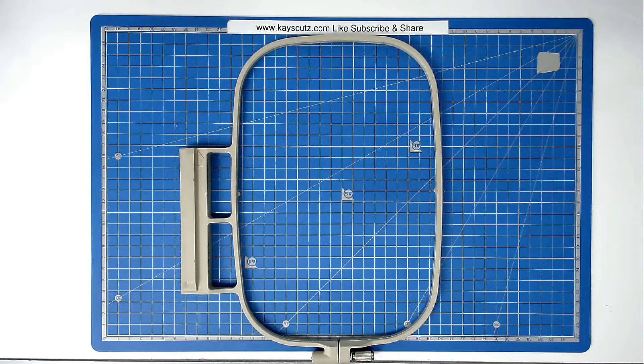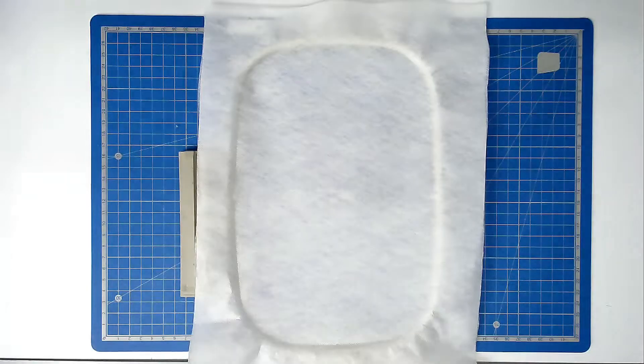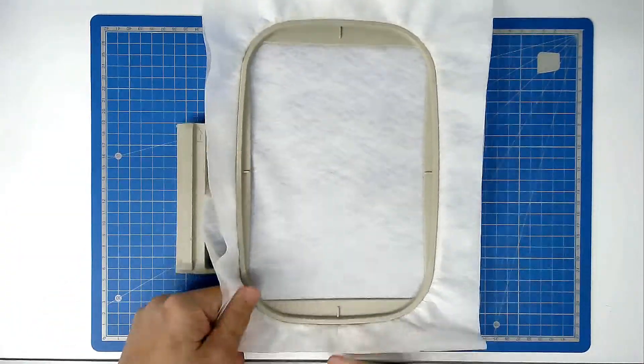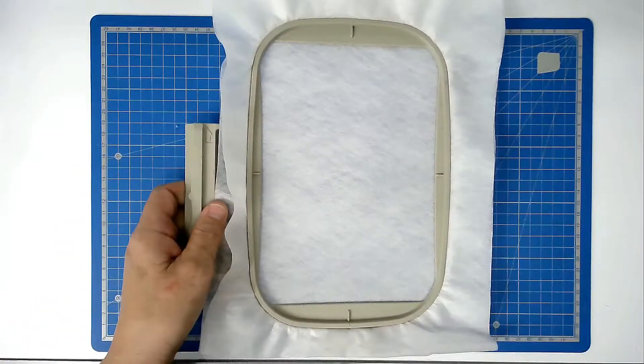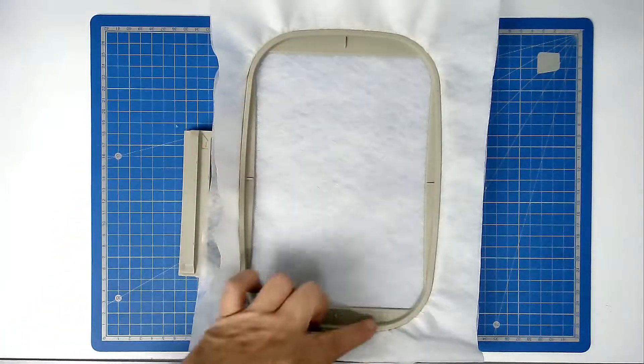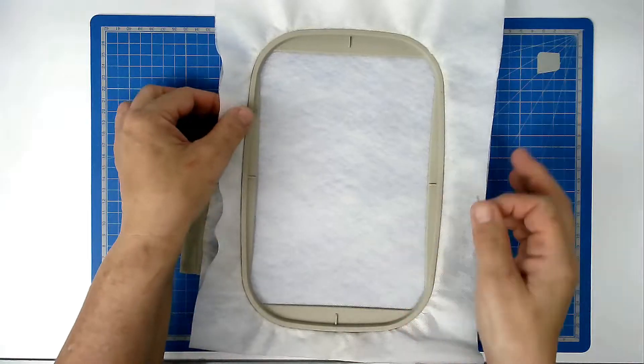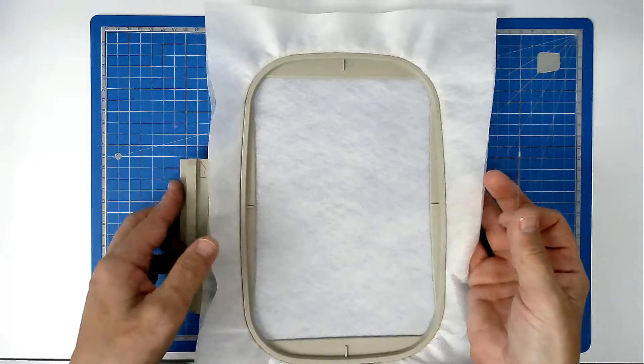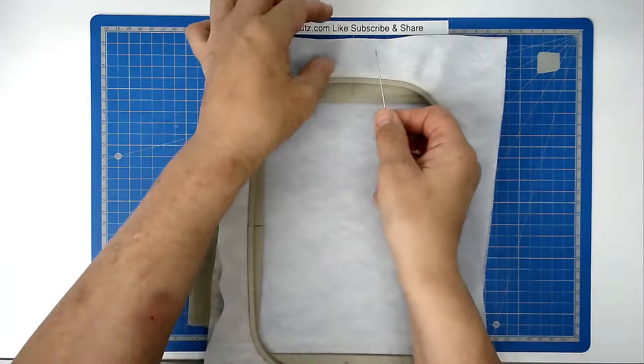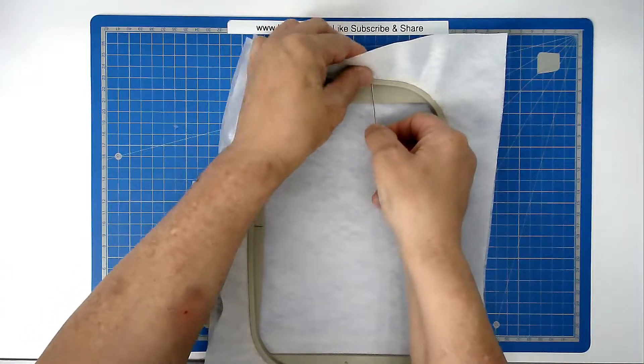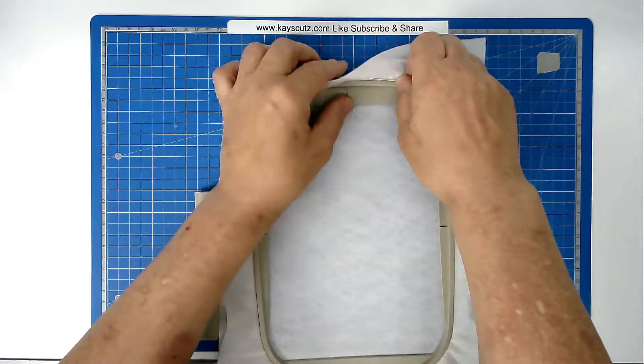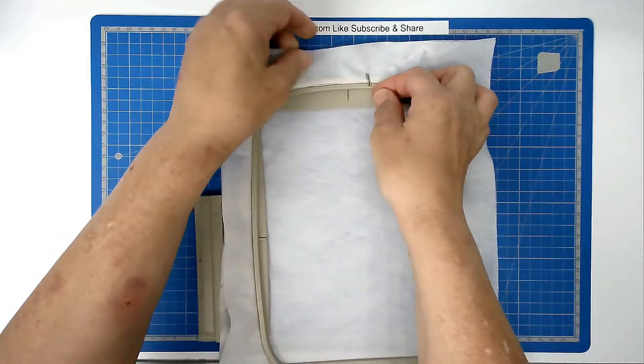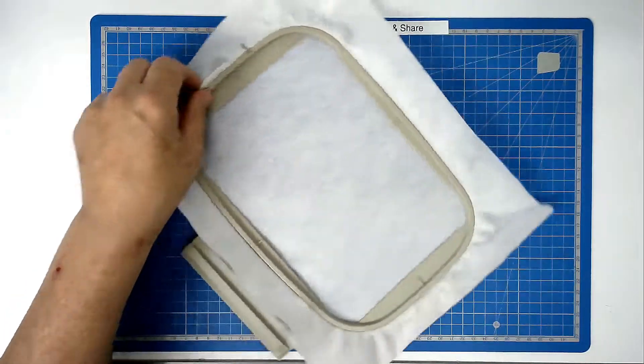We're going to start off by hooping two layers of stabilizer and then we're going to pin around the top edge of our hoop to keep the stabilizer nice and taut. Take your pin, place it on top of the inside hoop, push it through your stabilizer, and then bring it back through and back through your stabilizer again. That's going to anchor it and you're going to do that on all four sides.